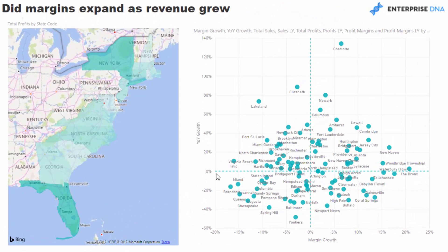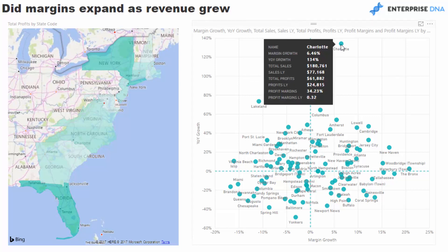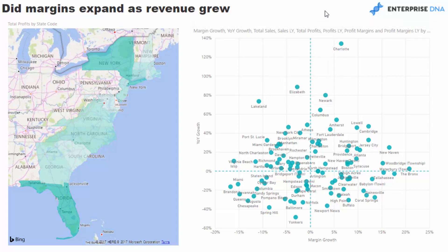We can see quite quickly from the axis who's doing well and who's not from a revenue growth perspective. Some stores are doing very poorly while others are doing really well — for instance, Charlotte is doing extremely well with revenue growth up 134 percent, as shown in the tooltip.